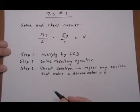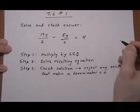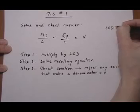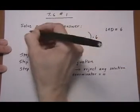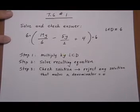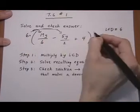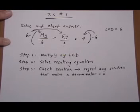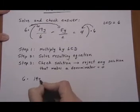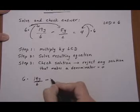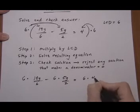All right, so let's start with this one here. We have 19y over 6 minus 5y over 2 equals 4. First, we want to multiply by the LCD. Well, the LCD here would be 6, so let's multiply both sides of the equation by 6. When we multiply both sides of the equation, every single term in each side of the equation gets multiplied once by the multiplier. So that would give us 6 times 19y over 6 minus 6 times 5y over 2 equals 6 times 4.